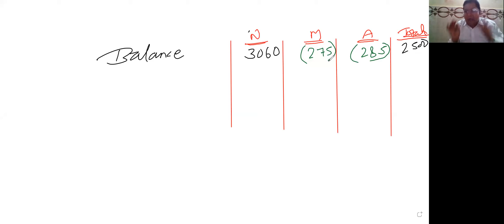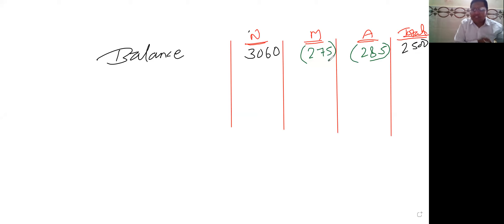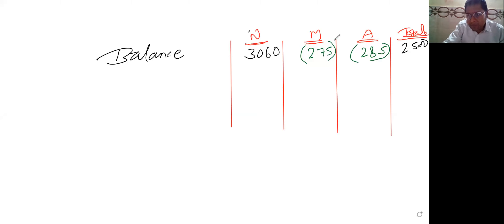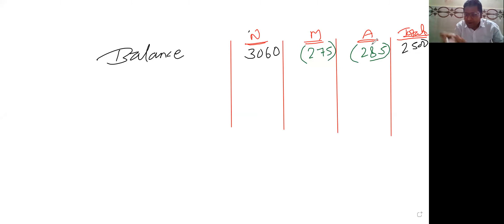अब देखो — पहले भी पता है, अगर किसी भी underwriter को credit आएगा तो adjust हो जाएगा other underwriters में। अब इधर क्या हो रहा है — इसमें two underwriters को credit आ गया, M और A का credit है, तो इसका benefit किसको मिलेगा? N को। N को adjust कर देने का।